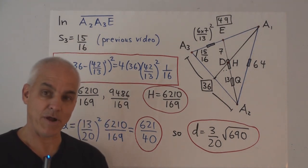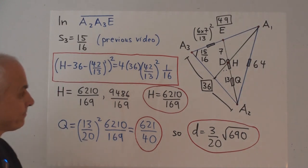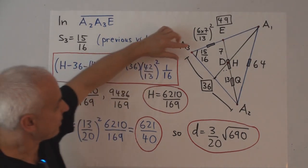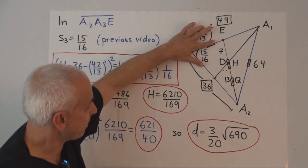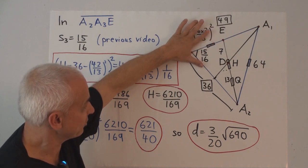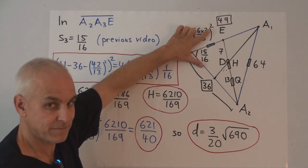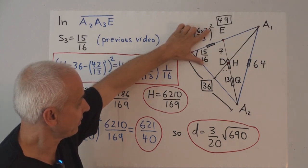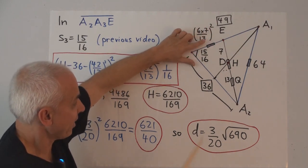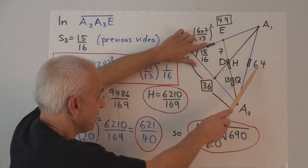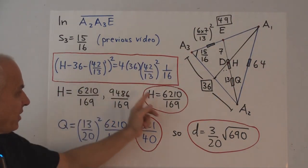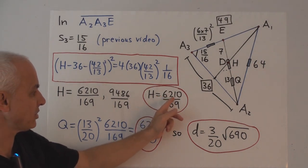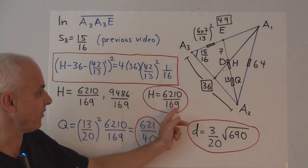And we have to decide, should we take the bigger one or the littler one? Well, we should take the littler one, because this spread here is acute. The second solution would correspond to an obtuse spread of 15/16, which would be something like that. Just the complement of that one. And we know this is acute, because 36 plus 49 is bigger than 64. Alright, so we have to take the smaller value of H, and there it is right there: 6210 divided by 169.